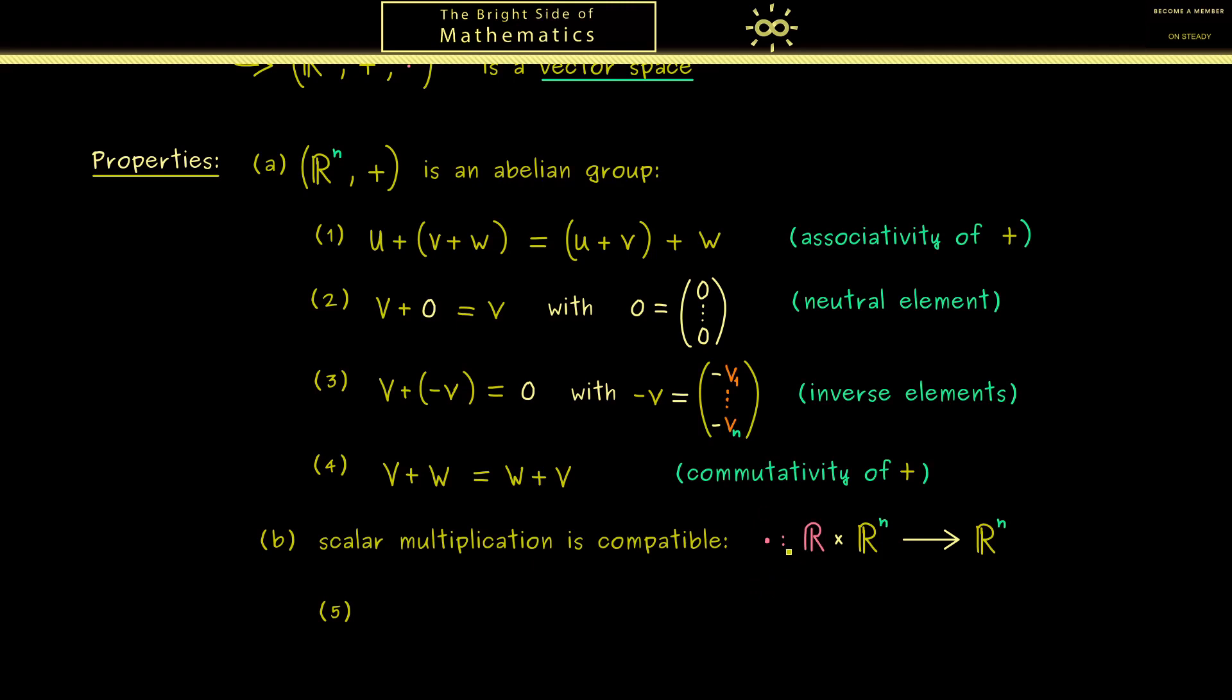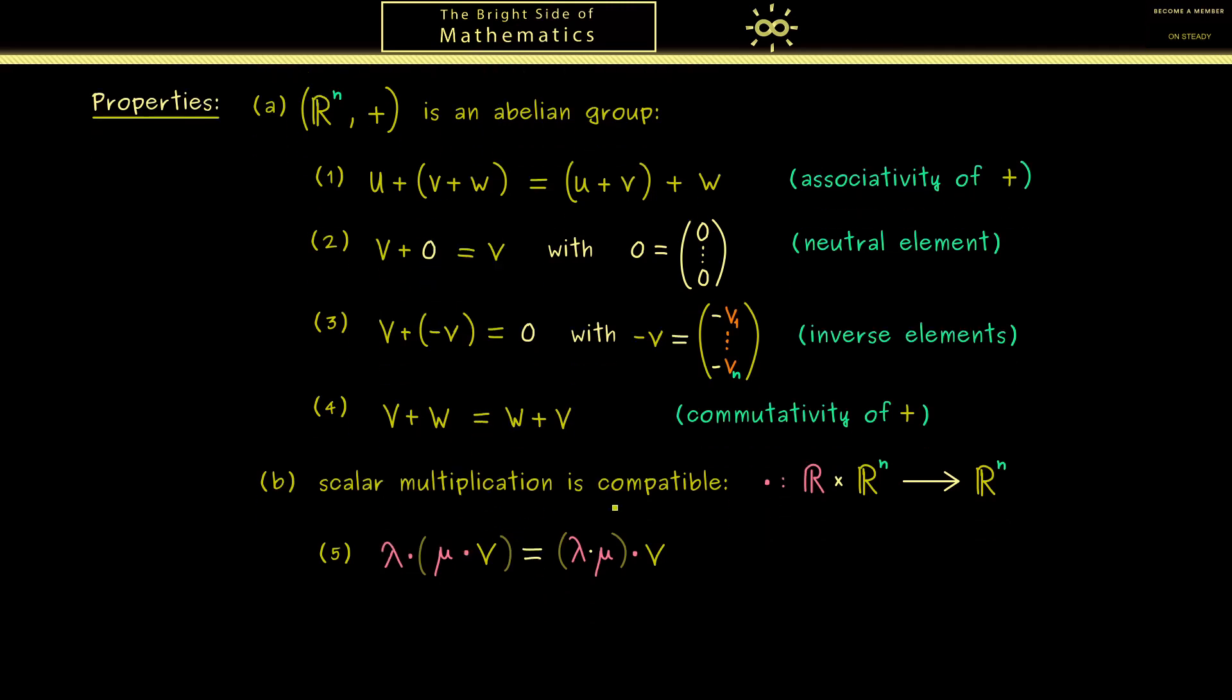However, please don't forget here we defined a new map we call a multiplication, but we also have a multiplication in the scalars. Hence multiplying two scalars lambda and mu is not a problem for us. We simply get a new scalar here. And this new scalar we can use as a scaling factor for vector v. However, this should be the same when we first scale the vector v with the scalar mu, and then scale it again by the factor lambda. And exactly this is what we want when we say that the scalar multiplication is compatible with the multiplication in R itself.